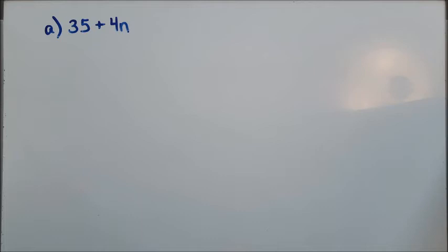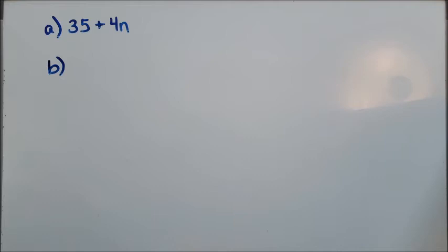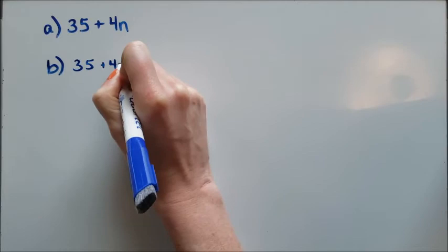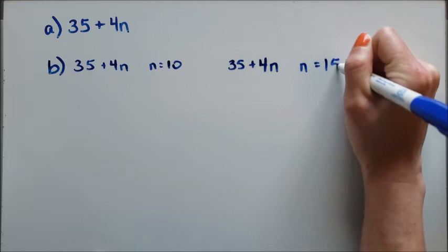Part B asks us how much will a party cost for 10 people or for 15 people. To determine this, what we're going to do is plug 10 and 15 into this expression. I'm going to have 35 plus 4n, where n equals 10, and 35 plus 4n, where n is equal to 15.